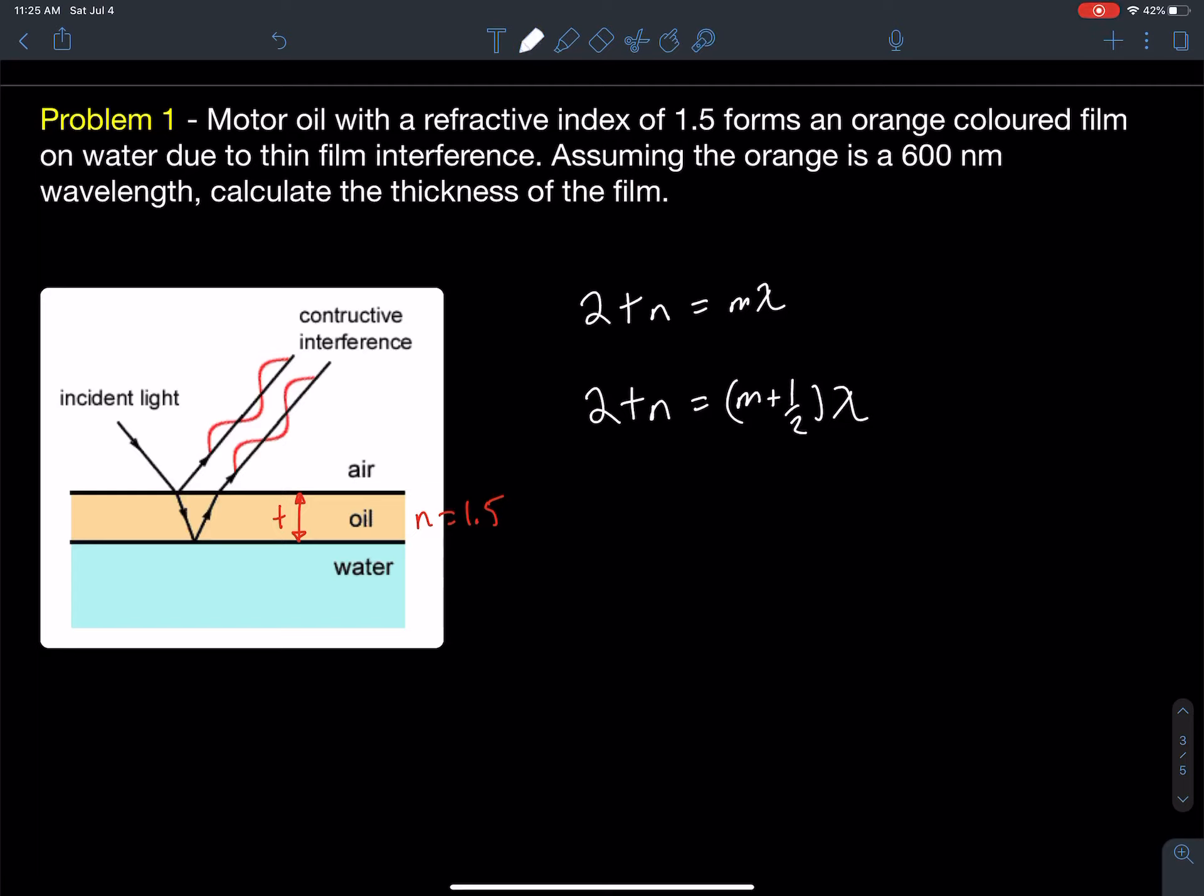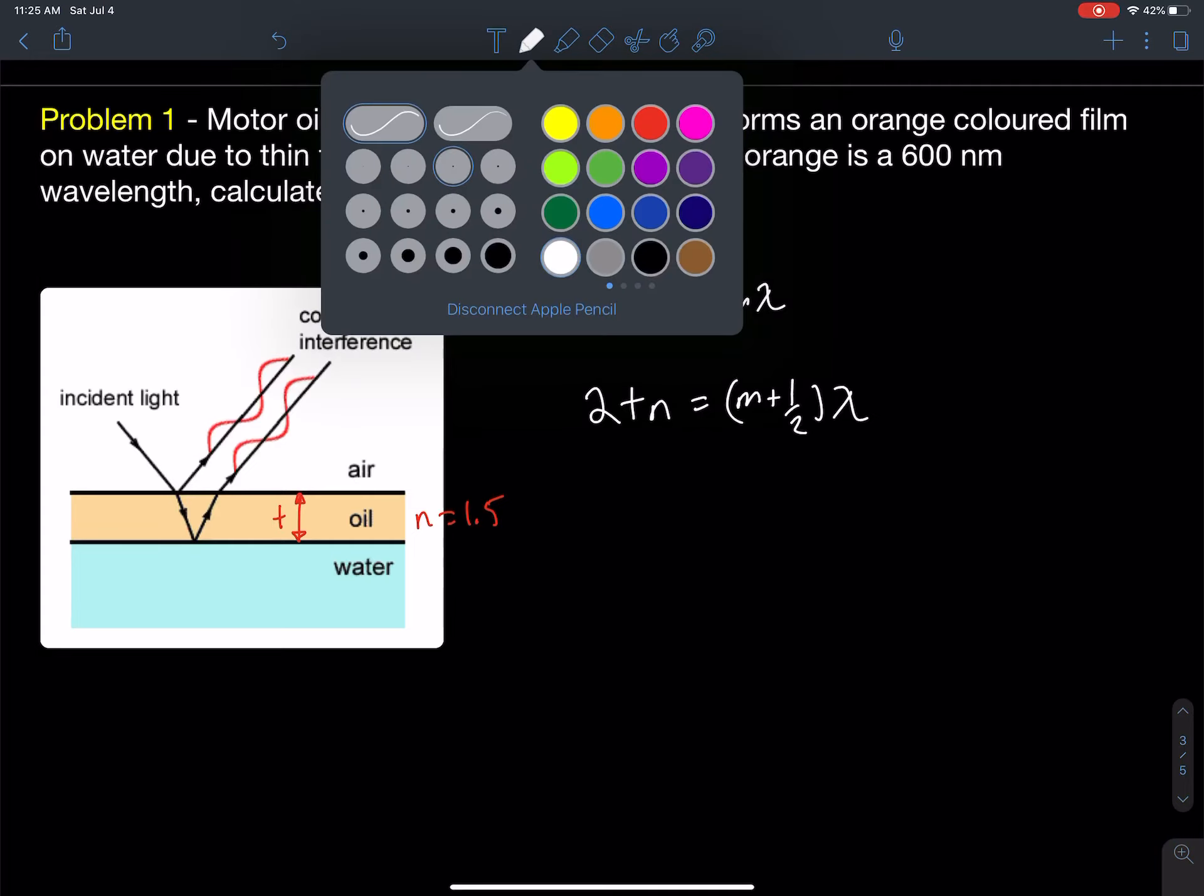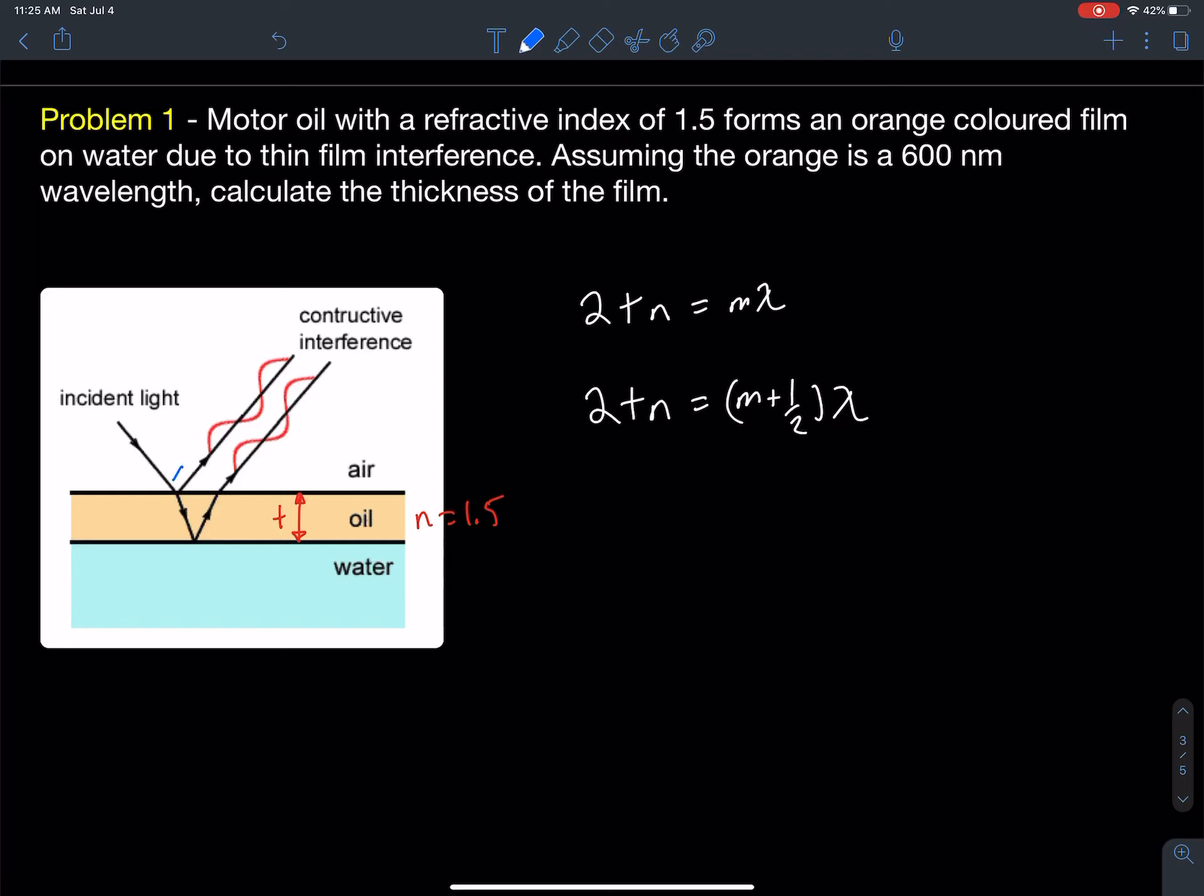Let's take a look. Is there a phase shift over here? We're going from low refractive index, n equals 1, to higher refractive index. So over here, I would say there is a phase shift. So there's going to be a half wavelength shift at that point.